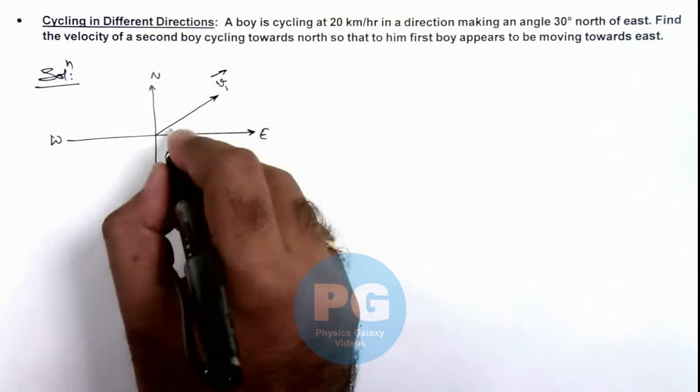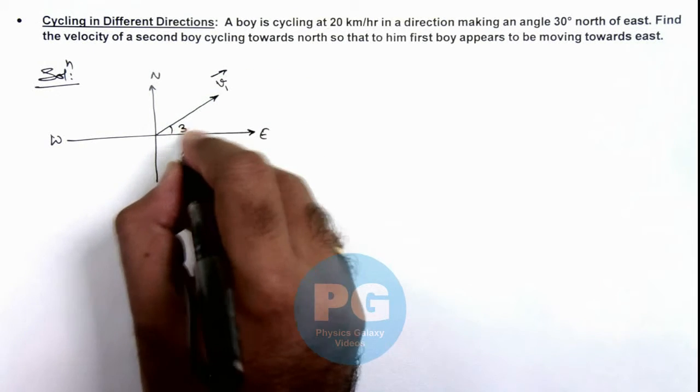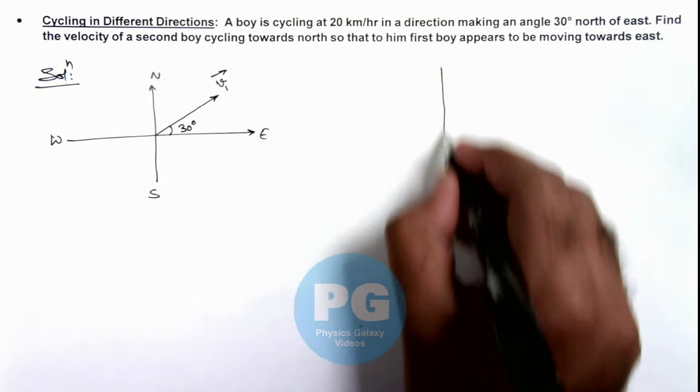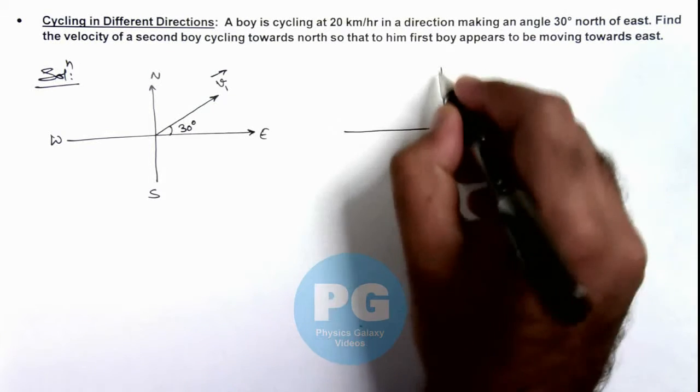We denote it by v1, who is cycling at an angle 30 degrees from east direction toward north. And we are given that the second boy is cycling toward north.